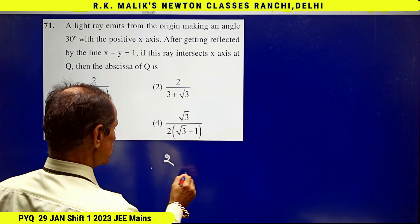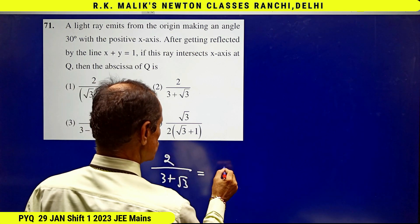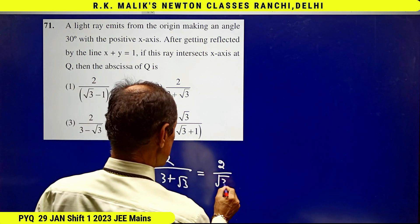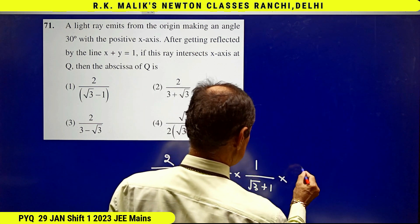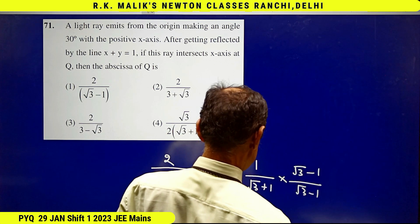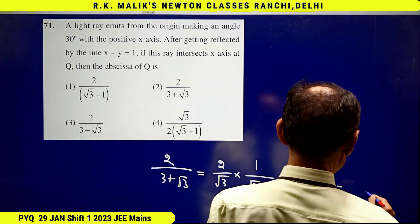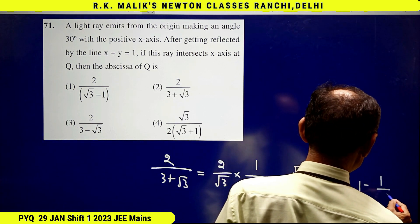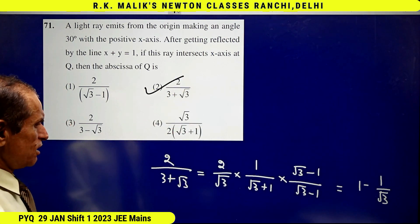Let us check this one: 2/(3 + √3) equals (2/√3) × 1/(√3 + 1). Rationalizing it, I get this as 1 - 1/√3. Hence I can say the second choice is correct.